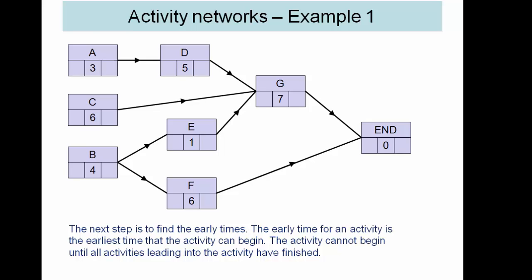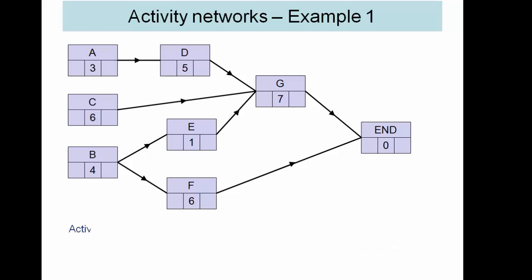The first part of this process is to put the earliest time that each activity can start. So obviously A, B and C can all start at time zero. D requires A to complete so D can't start until A is completed so the earliest that will be is three.